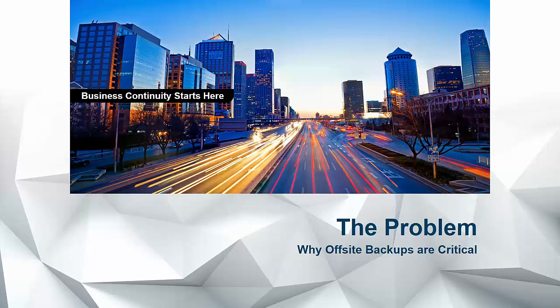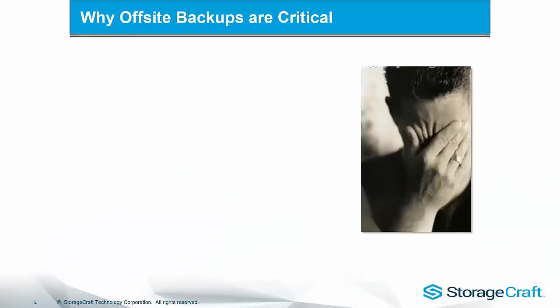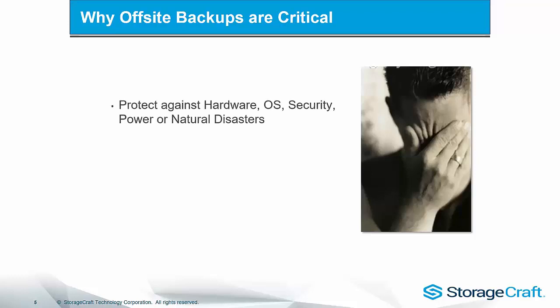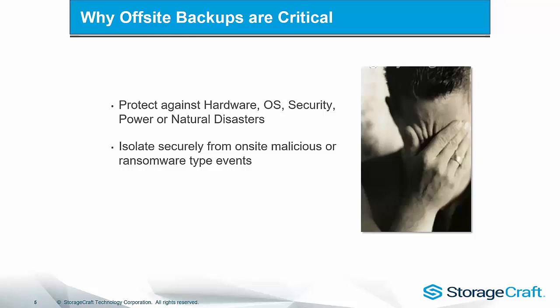So what is the problem we're trying to solve and why are off-site backups so critical? On-site backups are the best way to ensure speedy backups for frequent RPO and rapid recovery for a fast RTO. However, today, business continuity management still remains a critical weak spot for organisations of all sizes. Some of the key reasons to get a copy of your backups off-site are: you need to protect against hardware, operating systems, security, power or natural disasters. You should isolate separately from on-site infrastructure to protect against malicious or ransomware type events — the last thing we want is to find our only backups have been rendered useless. Finally, we need to ensure we have multiple copies of backups to ensure they are resilient against corruption, particularly a continuous incremental image chain where you are reliant on a single base image.